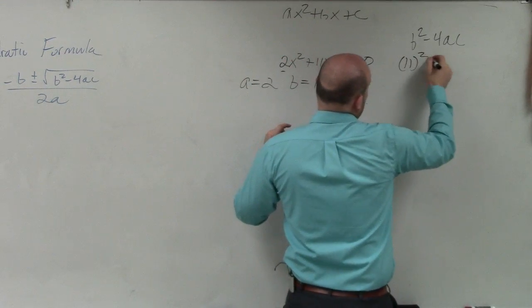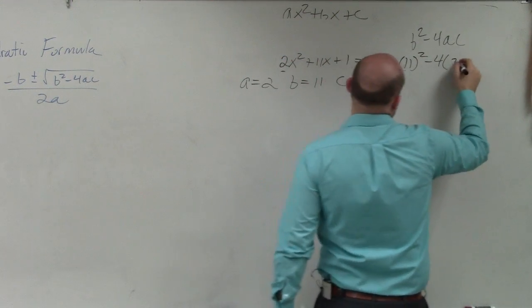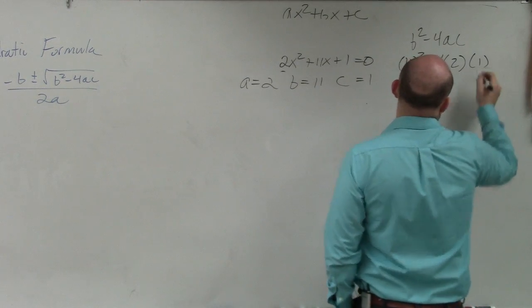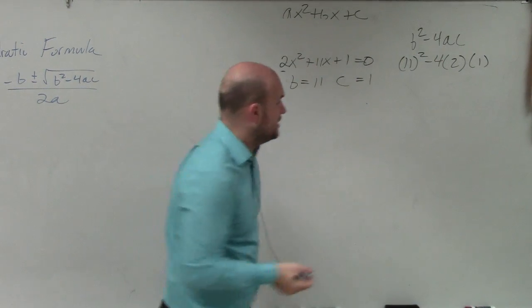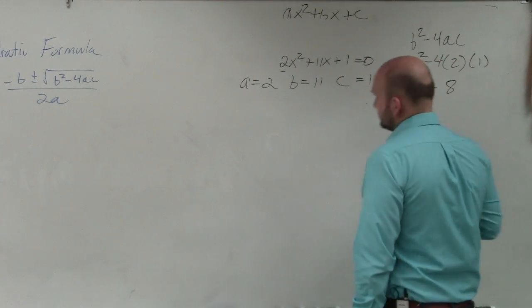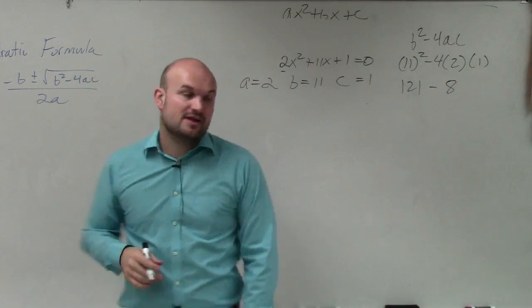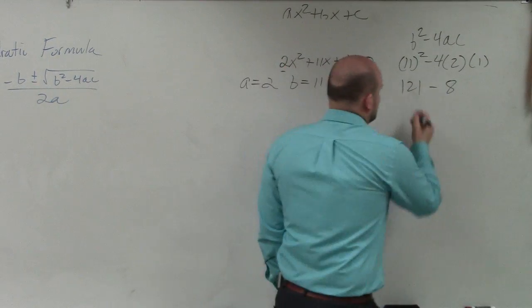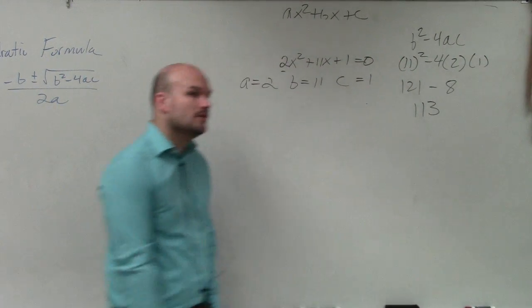So I have 11 squared minus 4 times A, which is 2, times C, which is 1. So 11 squared is 121 minus 4 times 2, which is 8. 4 times 2 times 1, which is 8. Therefore, I have 121 minus 8, which is 113.